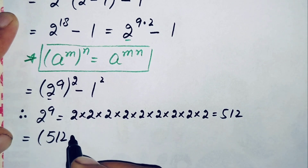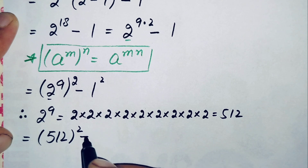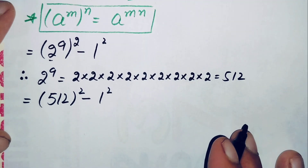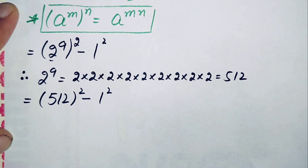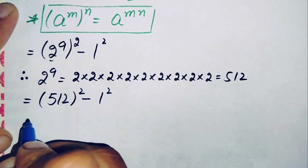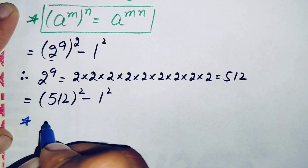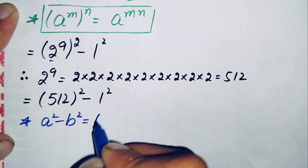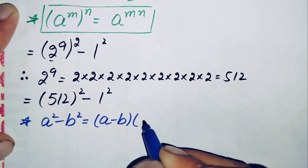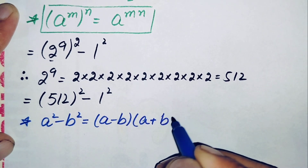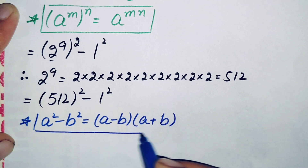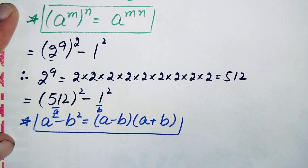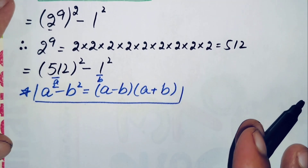Replacing 2 raised to power 9 with 512, this equation becomes 512 squared minus 1 squared. Here we will use the algebraic identity a squared minus b squared, which is equal to a minus b times a plus b.